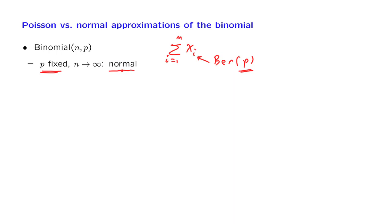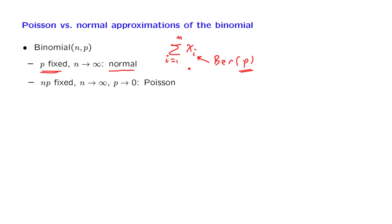On the other hand, if we take the product n times p — which is the expected value of the binomial — to stay constant, but we let n go to infinity and at the same time let p go to 0, then in this regime, in the limit, this random variable will be well approximated by a Poisson random variable. So we have two different approximations, both of them are valid, but they're valid in different regimes.